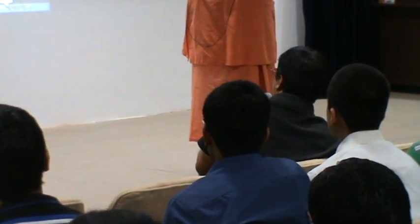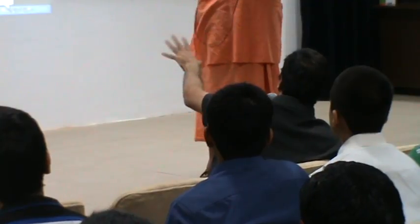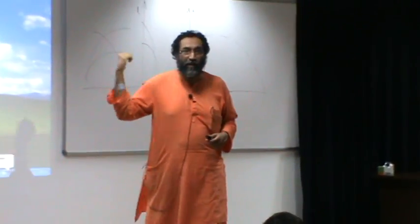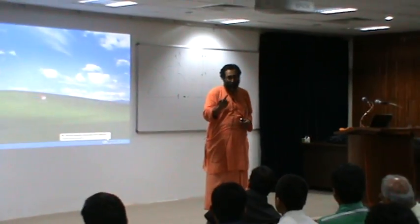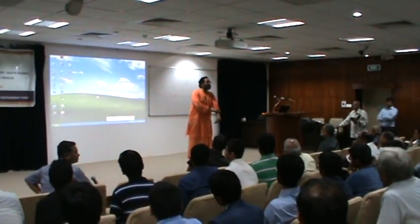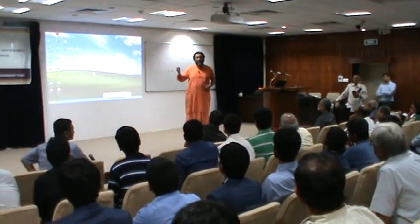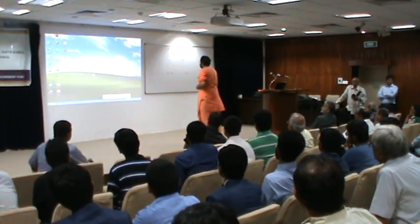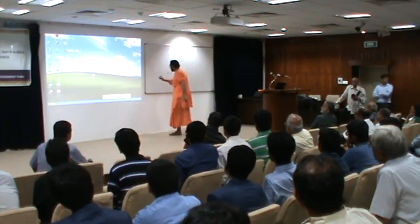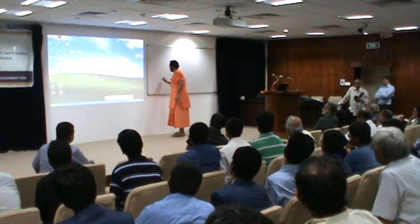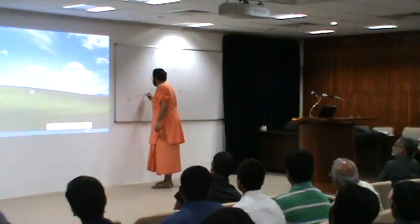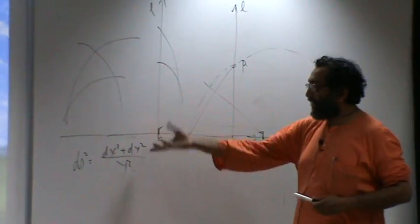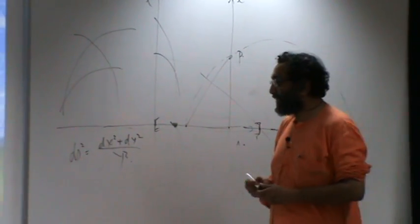Does Euclidean geometry come as a special case of hyperbolic geometry? No — it cannot, because hyperbolic geometry has infinitely many parallels and Euclidean geometry has exactly one. However, Euclidean geometry is a limiting case. The hyperbolic metric is ds² = (dx² + dy²)/y²; you start blowing up this metric by multiplying by N².